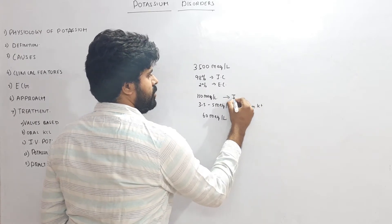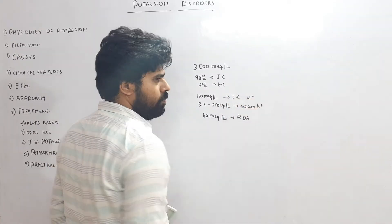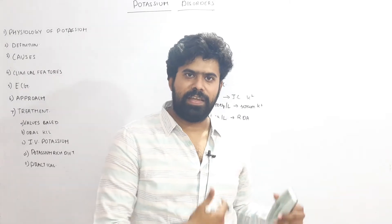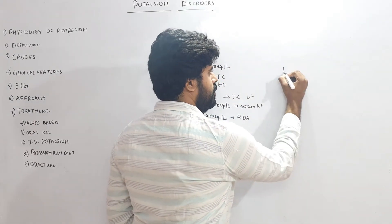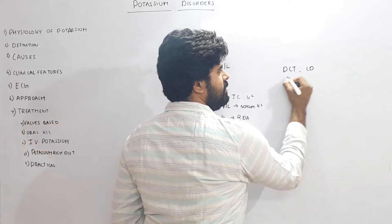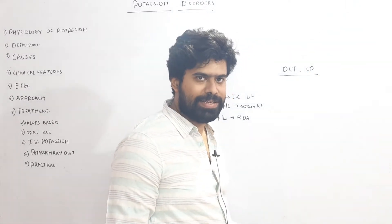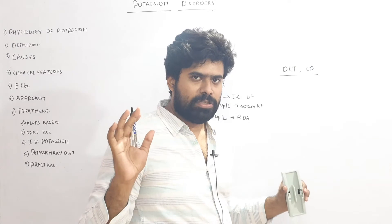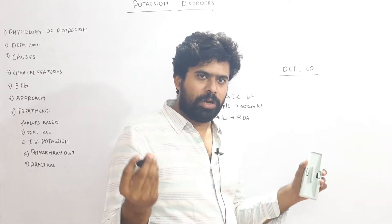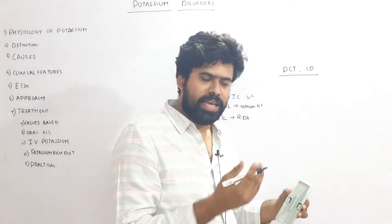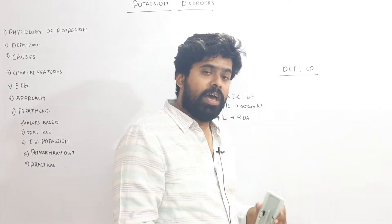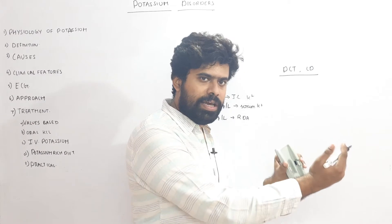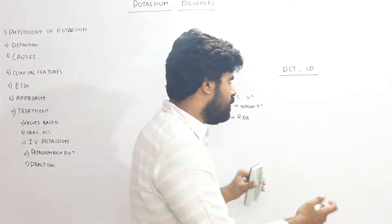So how does potassium get handled in our body? Potassium is predominantly handled by the kidneys, especially the distal convoluted tubule and the collecting duct — these are the major sites of potassium handling. Almost all the potassium that is filtered at the glomerulus gets reabsorbed at the proximal convoluted tubule. Beyond this, there is an entity called potassium secretion, which occurs in the distal convoluted tubule and collecting duct.